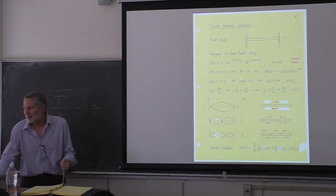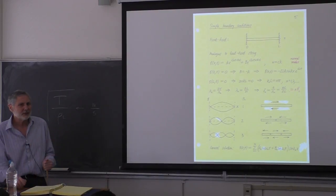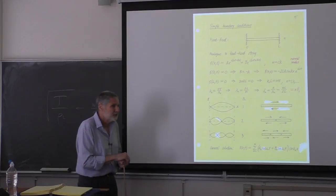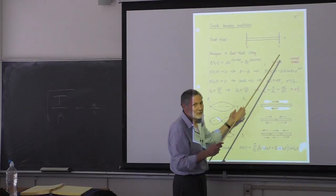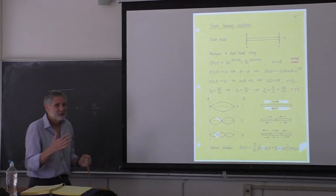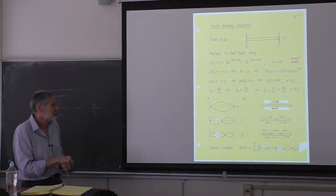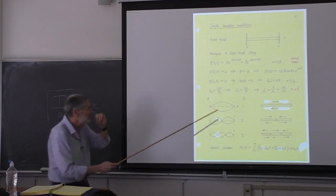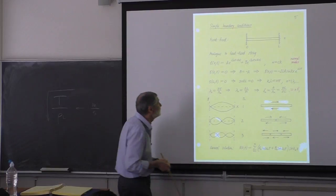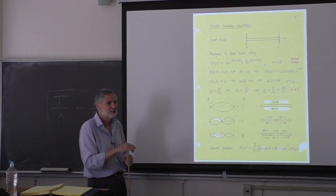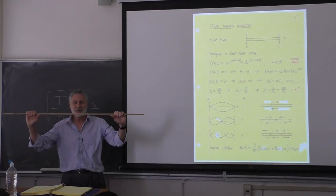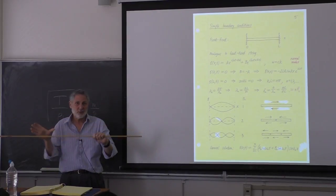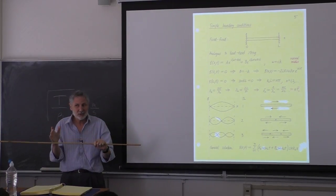Next we want to look at simple boundary conditions. We'll eventually hang all kinds of things here, just like we did with strings — stiffnesses, dashpots, inertia, added masses. But let's look at the simple ones first. Also, let me remind you that strings are transverse oscillations, whereas we're dealing with longitudinal here, and that can cause a little bit of trouble — we're going to talk about it with the graphs.